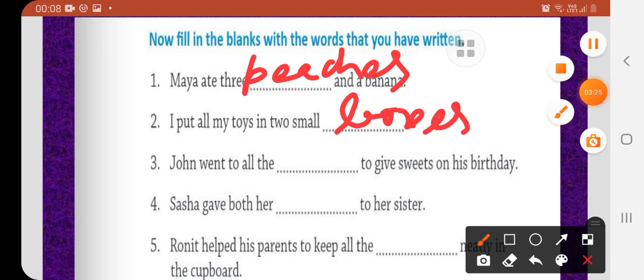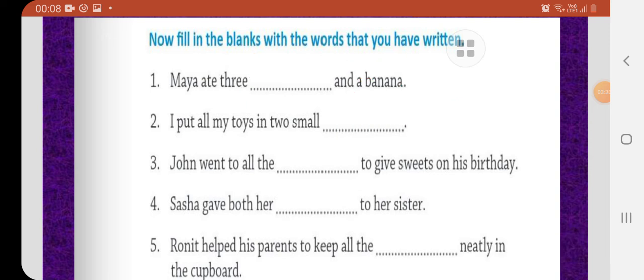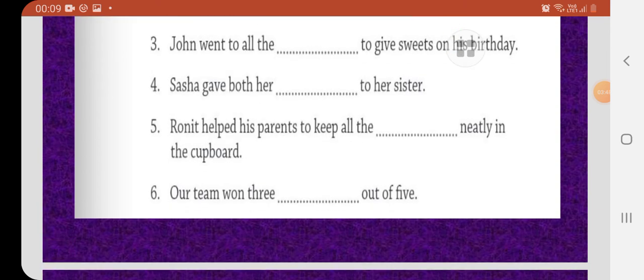And I put all my toys in two small boxes. Like this. And John went to all the dash to give sweets on his birthday. John went to all the classes. Sasha gave both her, you can write here dresses or watches. Sasha gave both her watches to her sister. You can write both. Ronit helped his parents to keep all the dash neatly in the cupboard. Here you can write both the noun dresses or watches. As you wish, you want to write.